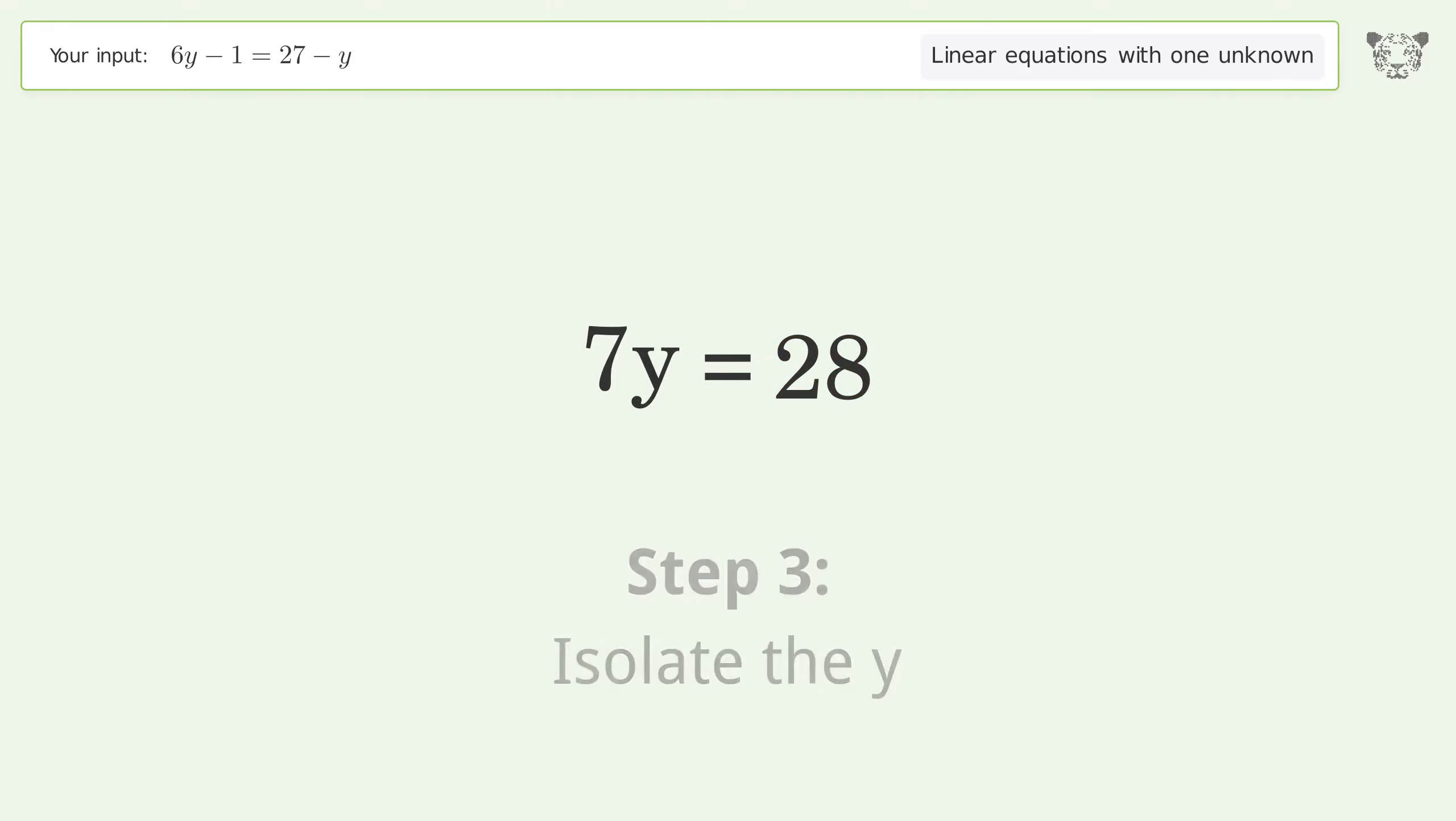Isolate the y. Divide both sides by 7. Simplify the fraction.